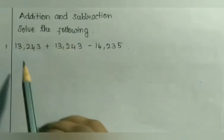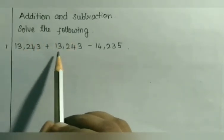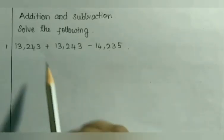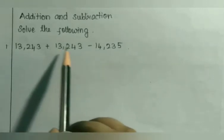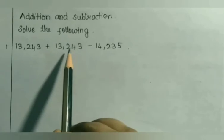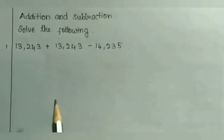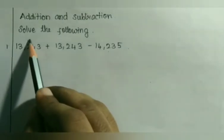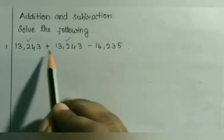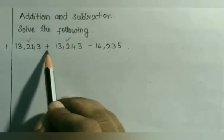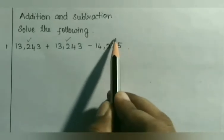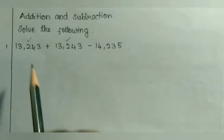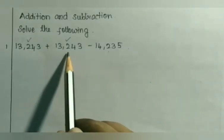Example sum: solve the following — 13,243 plus 13,243 minus 14,235. In this kind of problem we have to find the sum first, and with the sum we have to subtract and find the difference. So 13,243 will be addend 1 and 13,243 will be addend 2 because it has a plus sign before it. This will become the subtrahend, and the sum of the two addends is the minuend.